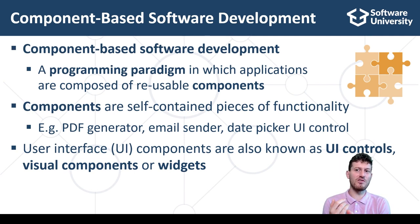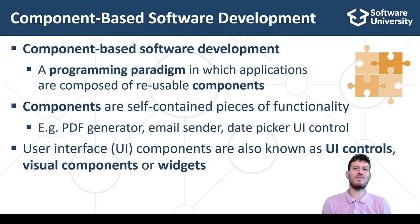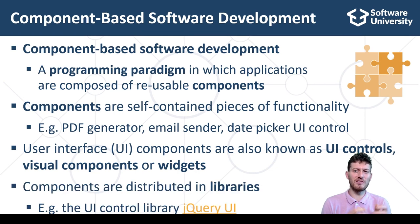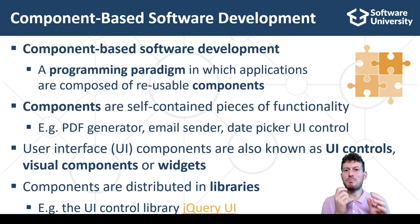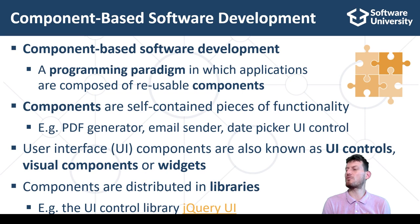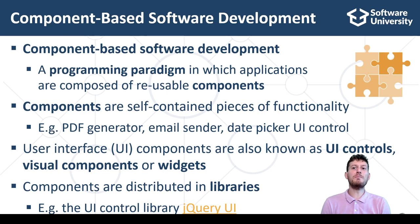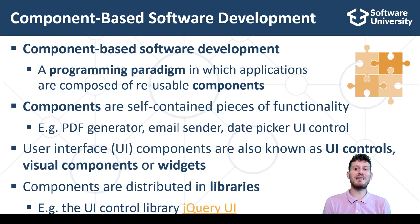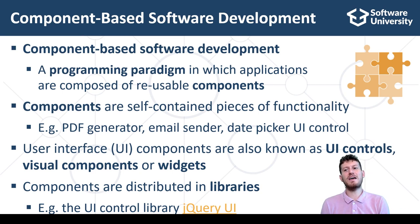Software components can be visual, such as the date picker, and non-visual, such as the PDF generator. Visual components are also called UI controls. Software components are distributed in component libraries — software components bundled as redistributable software packages. They can be downloaded from a software component repository such as NPM, NuGet, or PyPI, or can be purchased from software component vendors such as Telerik and others.